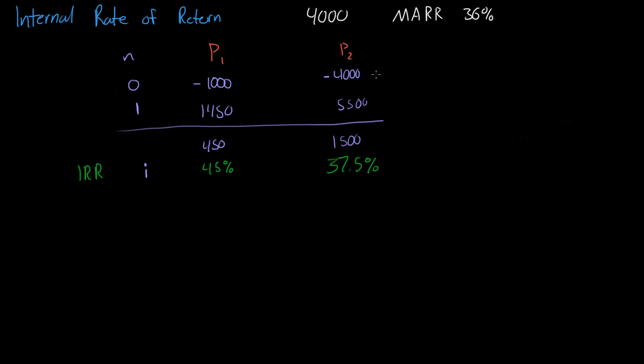Right now you're probably thinking, okay, this is really confusing. Because the MARR is 36%, and we have $4,000 to invest. Project 2 costs $4,000 to invest, and we get 37.5% rate of return. The internal rate of return is 37.5%. So, shouldn't we choose Project 2?